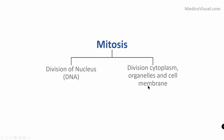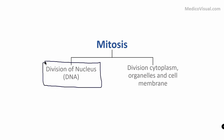The division of cytoplasm, organelles, and cell membrane is called cytokinesis. The main part is division of the nucleus, and it is the relatively toughest part to understand. Our main focus is therefore the division of the nucleus.